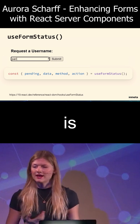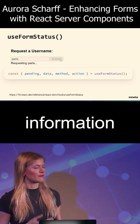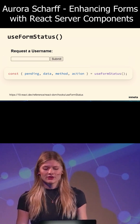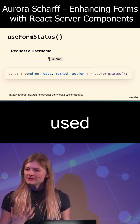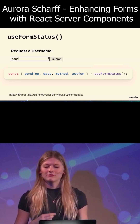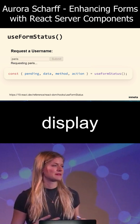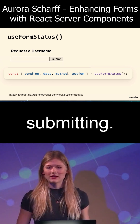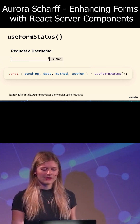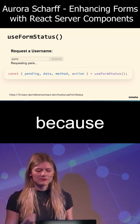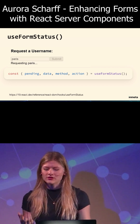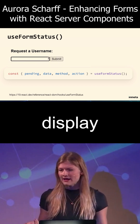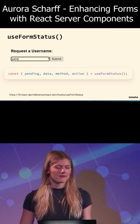useFormStatus is a hook that provides information about the last form submission. It must be used inside a form and can be used, for example, to disable a button or display the inputted data while a form is submitting. It enables progressive enhancement, because without JavaScript the button will still work fine — it just won't display any pending feedback.